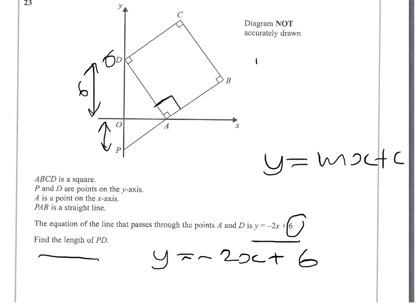First, we can get the gradient. The gradient is going to be the negative reciprocal. That's a rule you need to know: the gradient of a perpendicular line is the negative reciprocal of the line it's perpendicular to.